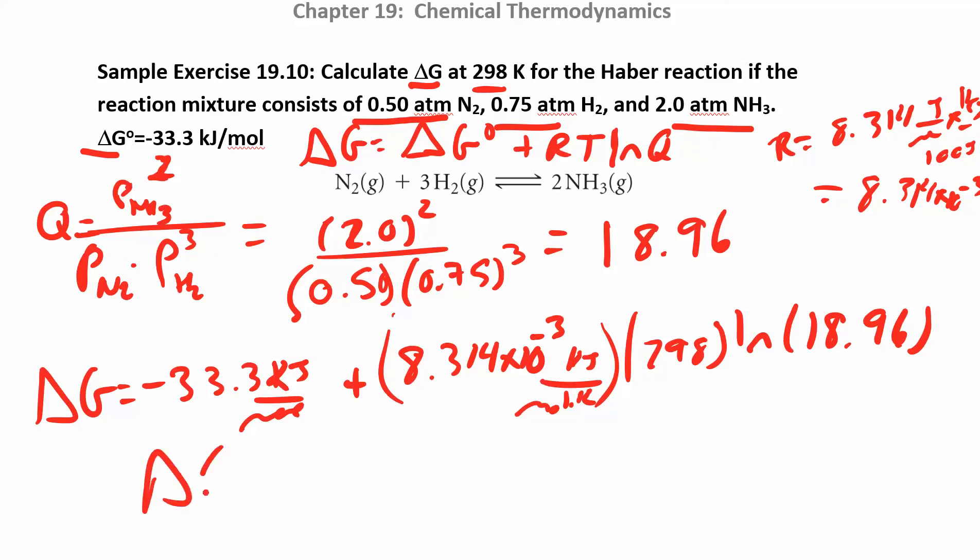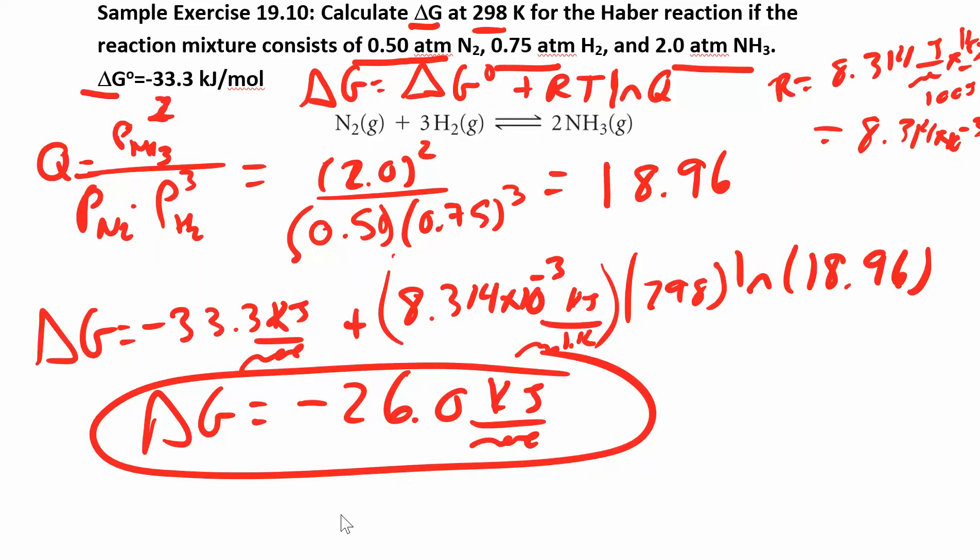When you work out this delta G, you get negative 26.0 kilojoules per mole. So that's a pretty straightforward problem, trying to calculate delta G under non-standard conditions.